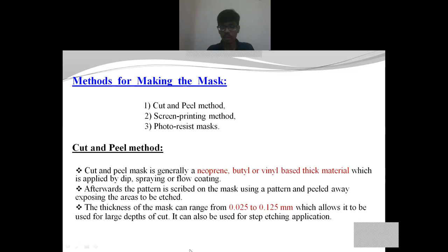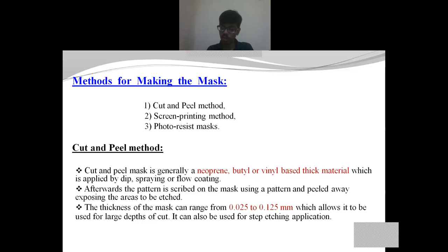The next thing is the methods of making the mask. There are three methods: the cut and peel method, the screen printing method, and photoresist masks. In the cut and peel method, we take the workpiece, cover it completely with masking material, then remove the mask at the unwanted portions. Then we take it into the reaction chamber for the chemical reaction with the etchant, take it out, and wash away the remaining masking materials to obtain the final product. It is a very simple and basic process.